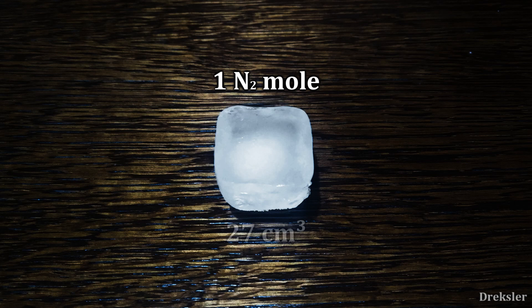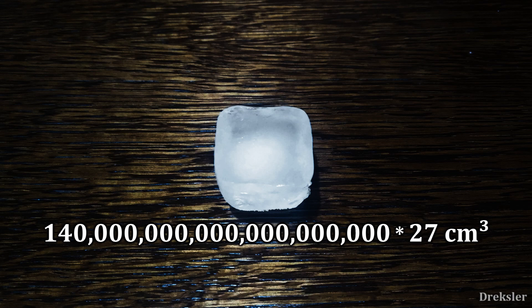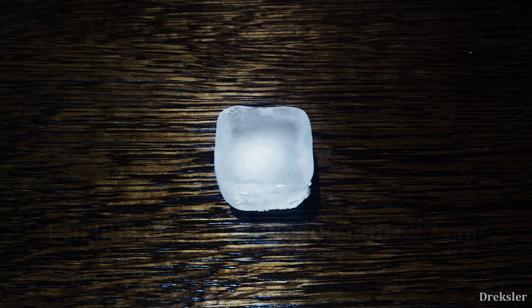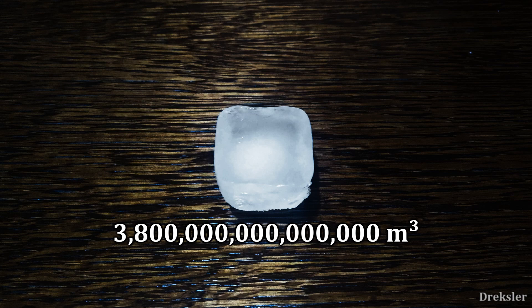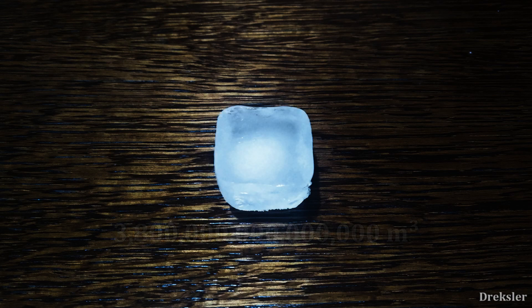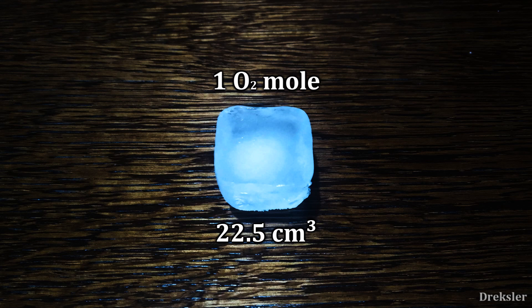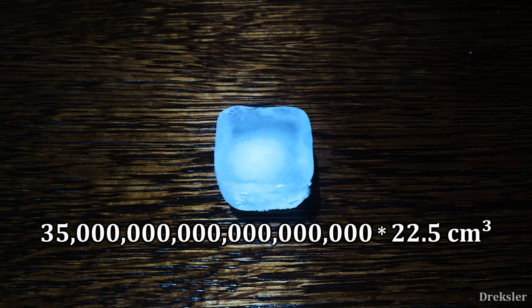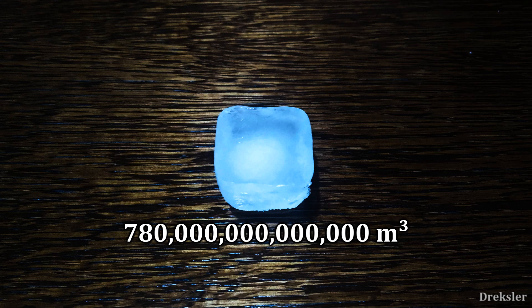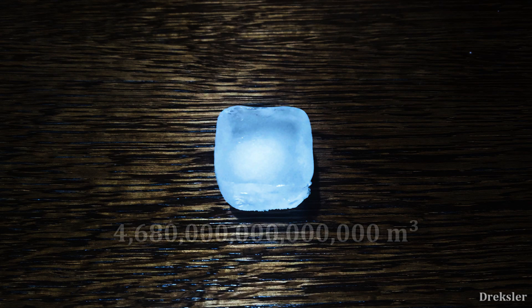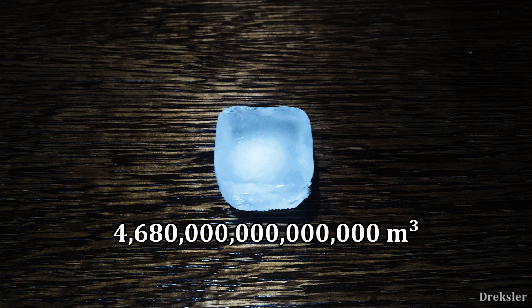A single mole of solid nitrogen ice has a volume of 27 cubic centimeters. Multiplying the 140 quintillion moles of nitrogen by that volume gives the total volume of solid nitrogen ice: 3.8 quadrillion cubic meters. For solid oxygen ice, one mole has a volume of 22.5 cubic centimeters. Multiplying the 35 quintillion moles of oxygen by that volume gives 780 trillion cubic meters. Together, nitrogen and oxygen would form 4.68 quadrillion cubic meters of ice.